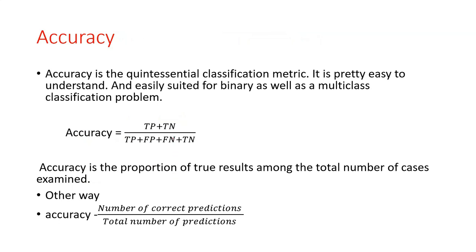Accuracy is pretty easy to understand based on the confusion matrix. It is suited for binary as well as multi-class classification problems. Accuracy is calculated as true positives plus true negatives — purely based on the true results — divided by the total number of predictions. In other words, accuracy is the number of correct predictions divided by the total number of predictions.